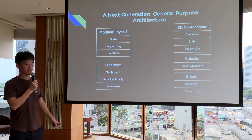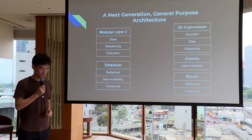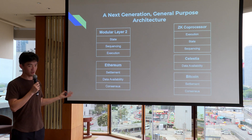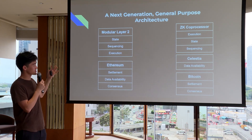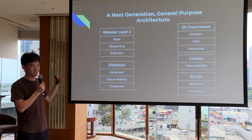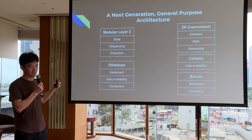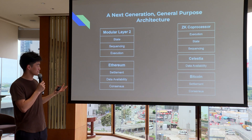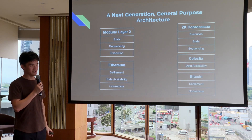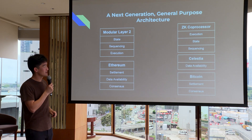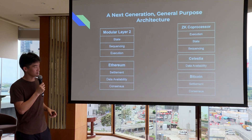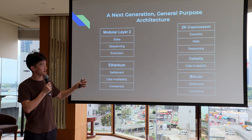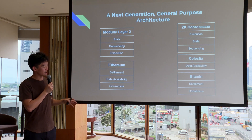Looking at this in more detail: on the left, you have how L2s have looked for the past five years — the L2 has states, blocks, sequencing via a centralized sequencer, and the VM or execution layer, while Ethereum handles settlement, data availability, and consensus. That's essentially what zkSync, Optimism, and similar chains are. On the right, this is where rollups are trending: DA is split off to Celestia, and the settlement layer can be things like Bitcoin or Solana — enabled by multi-chain ZK verifiability.